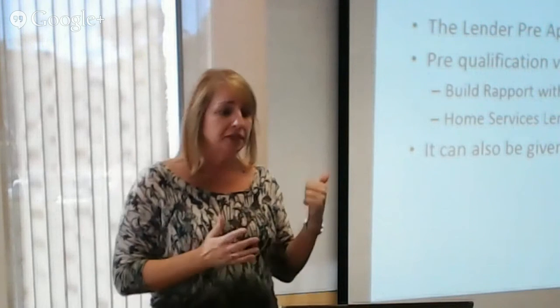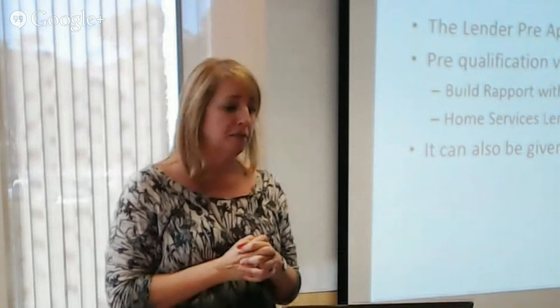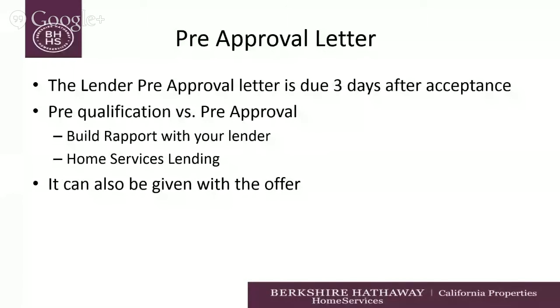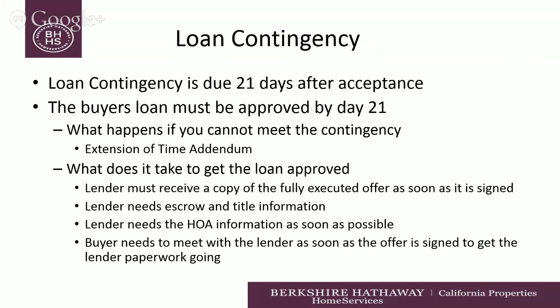This pre-approval letter can also be given with the contract — again, due within three days, but it can be given with the contract. Let's talk about loan contingency. In our new contract, paragraph 3J3 talks about loan contingency removal. It's really important to know that our loan contingency has been extended to 21 days — it used to be 17 in the old contract.